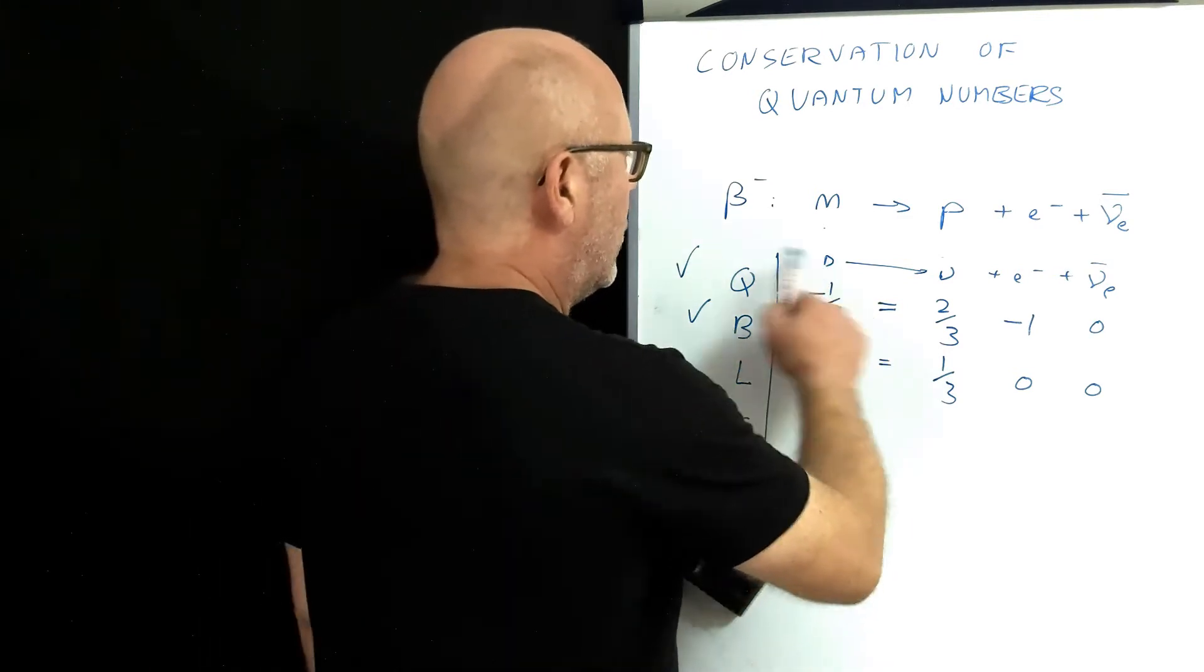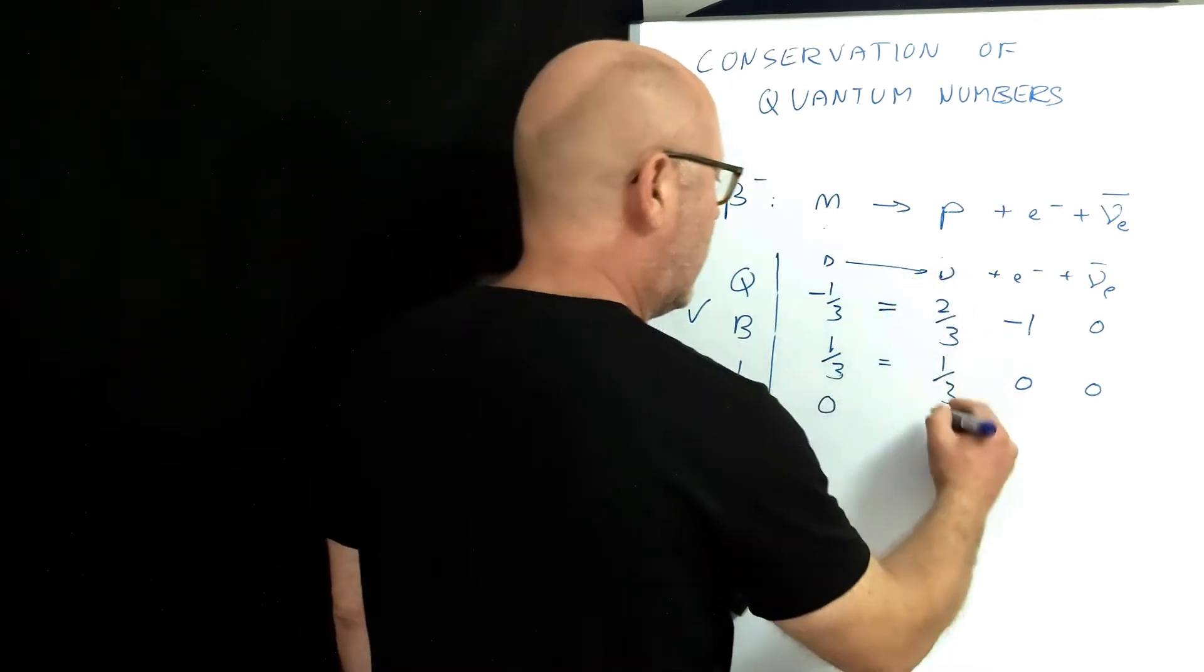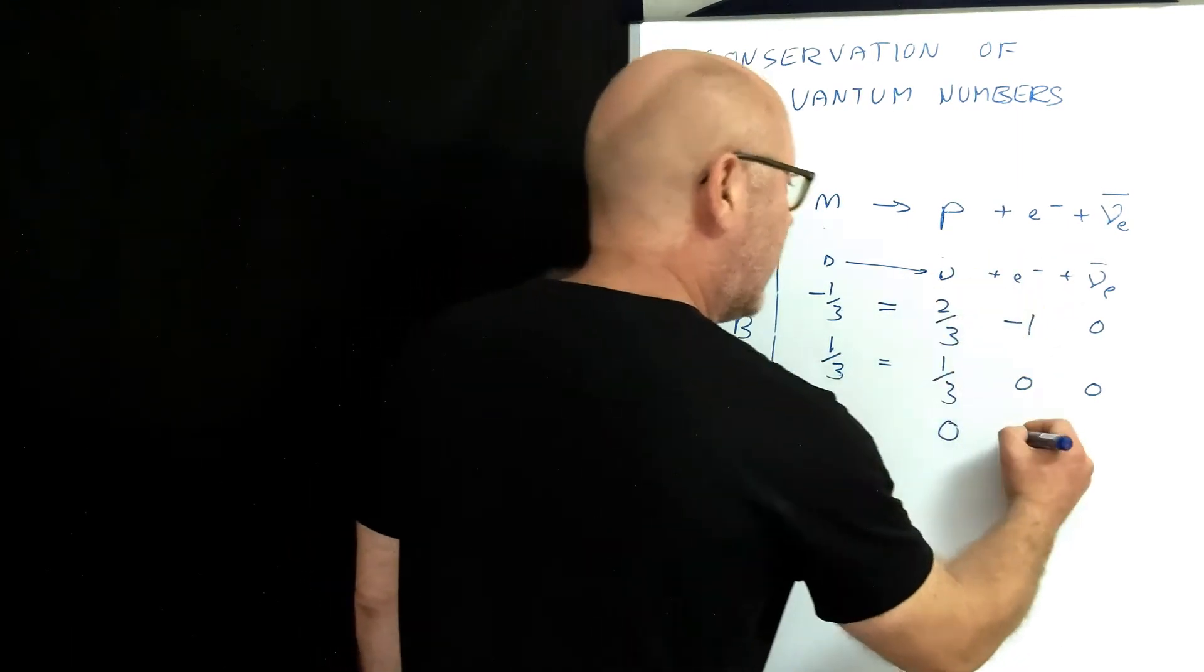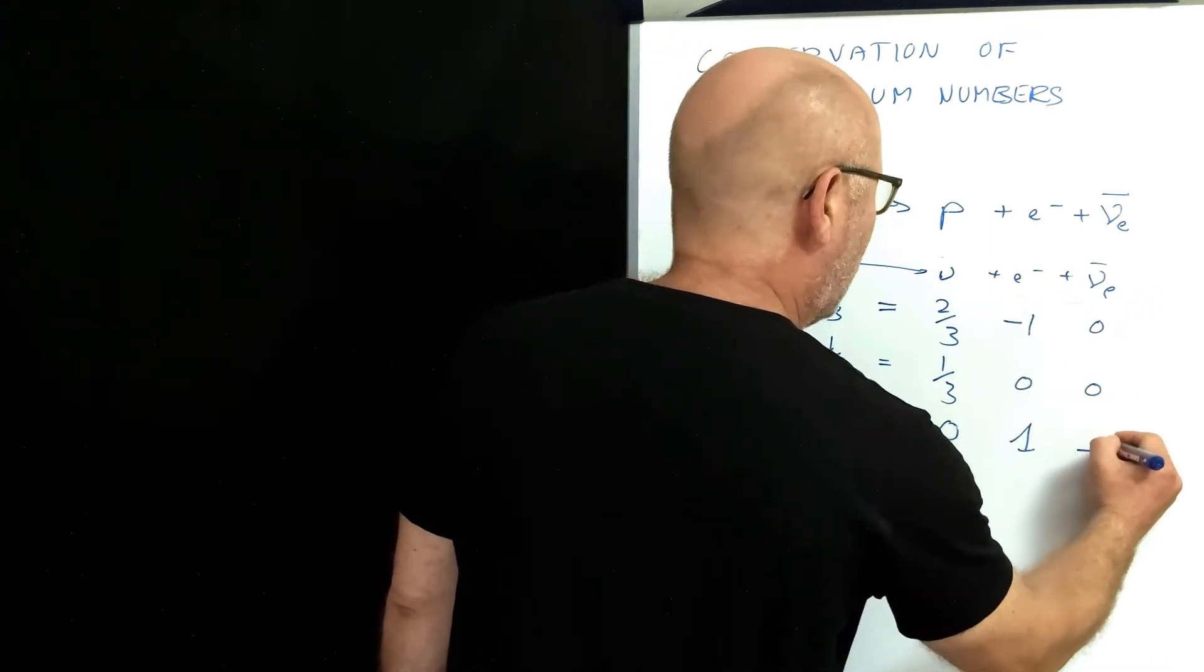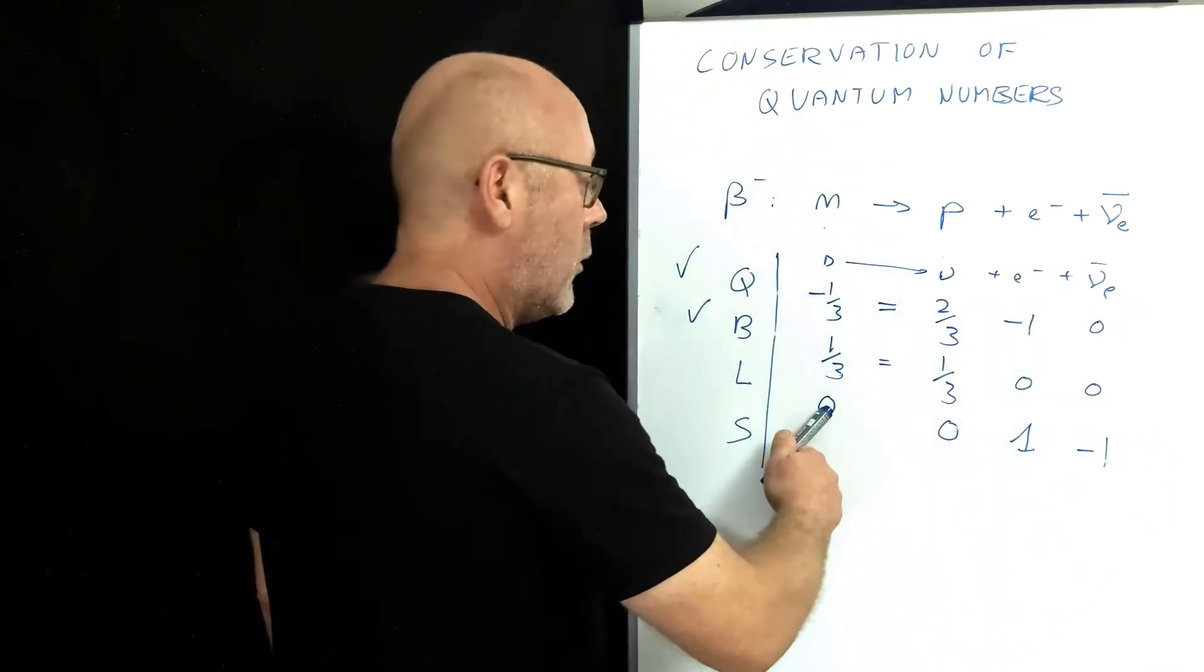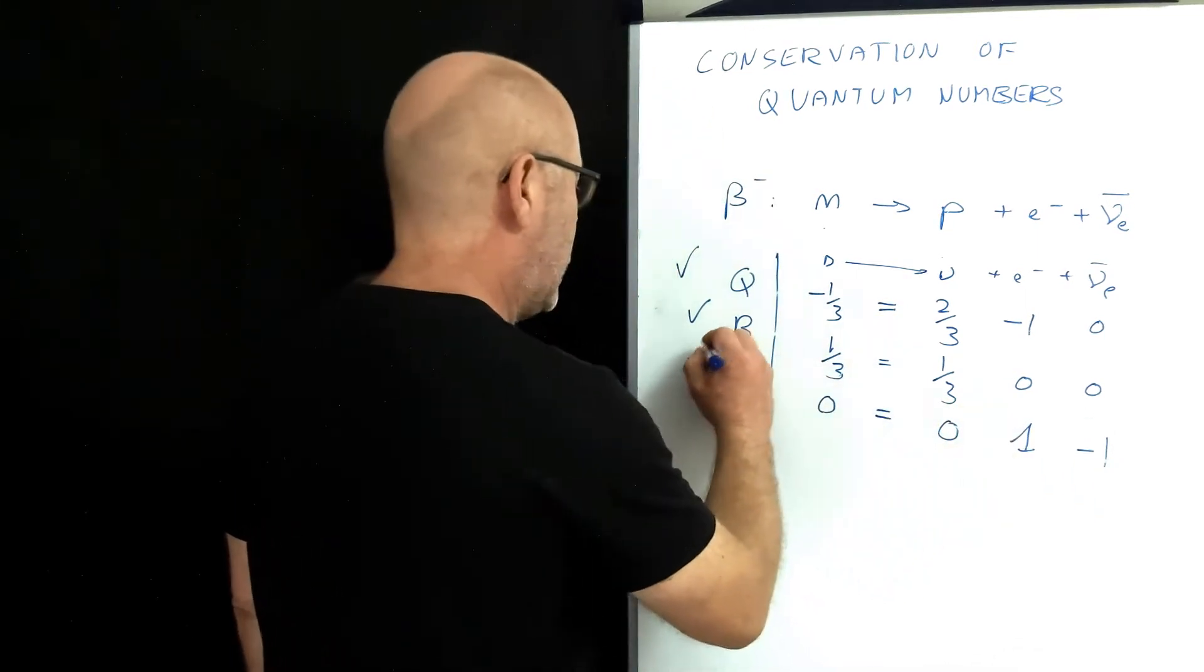Lepton number. So down is a quark, so it doesn't have a lepton number, neither does the up. The electron is actually a lepton, so plus one, and the anti-neutrino of the electron is an anti-lepton, so minus one. Zero equals zero, one, minus one, zero. So check!